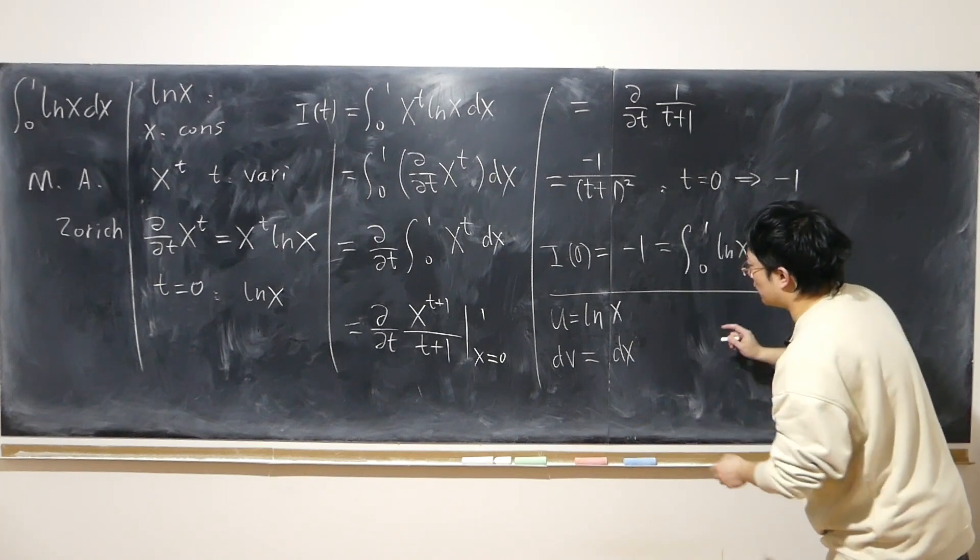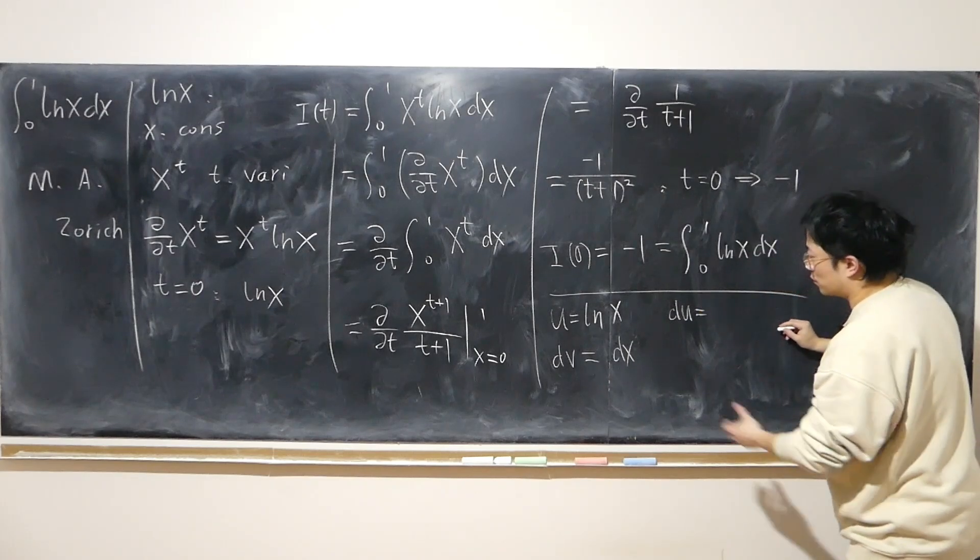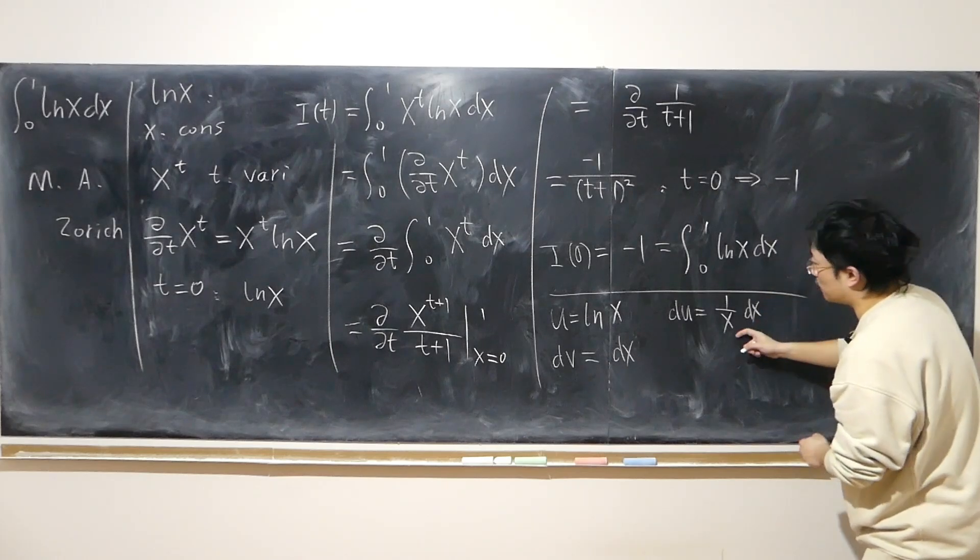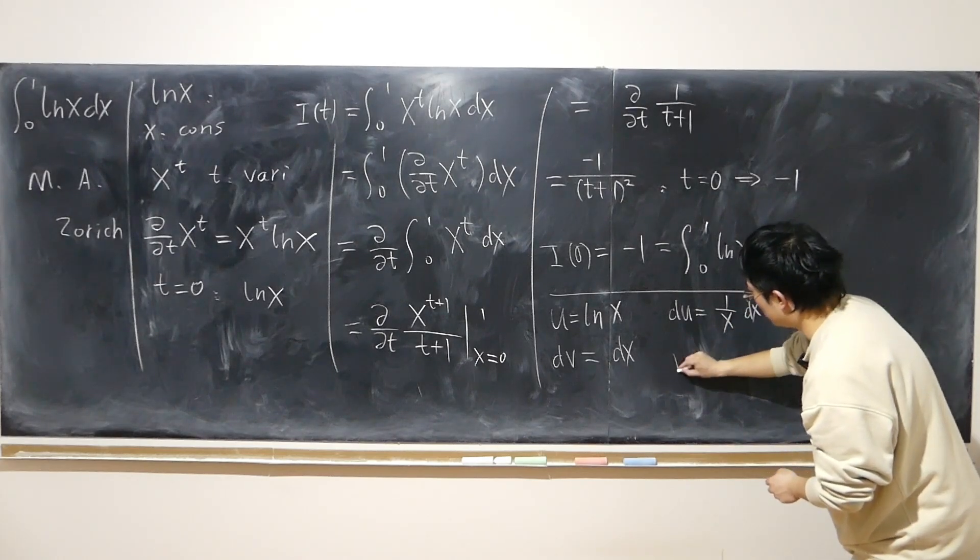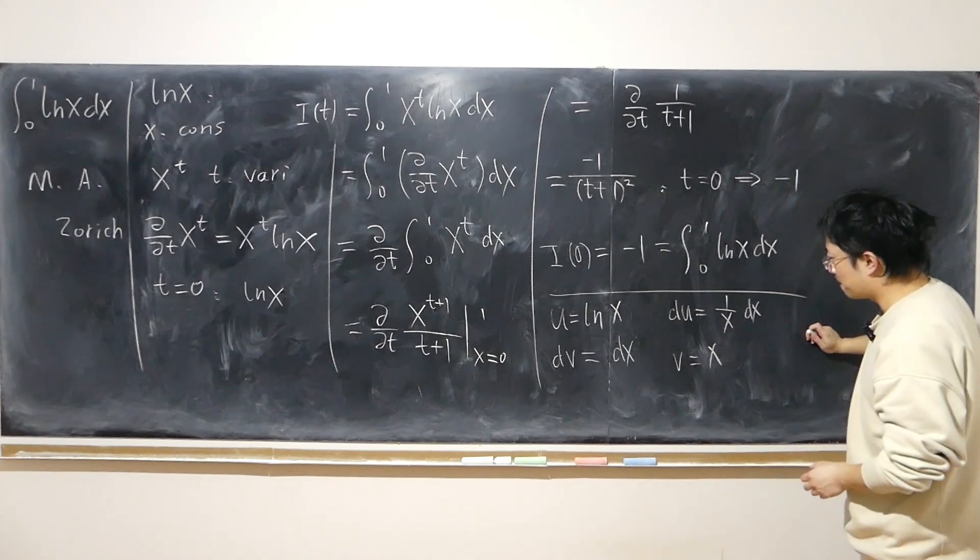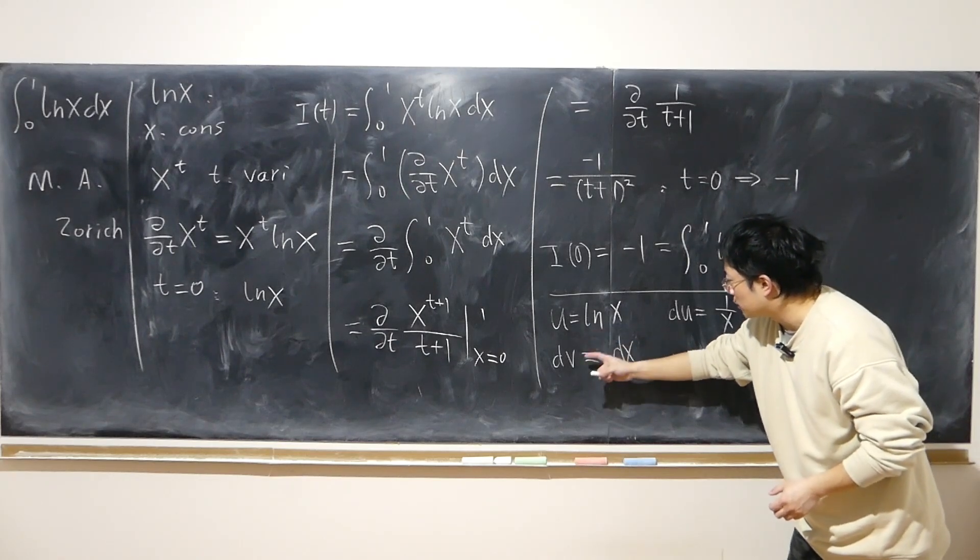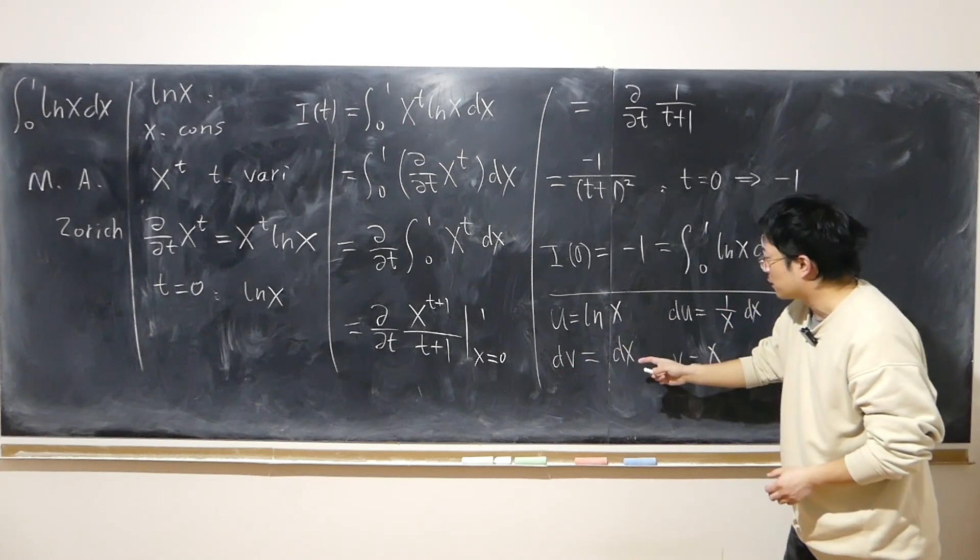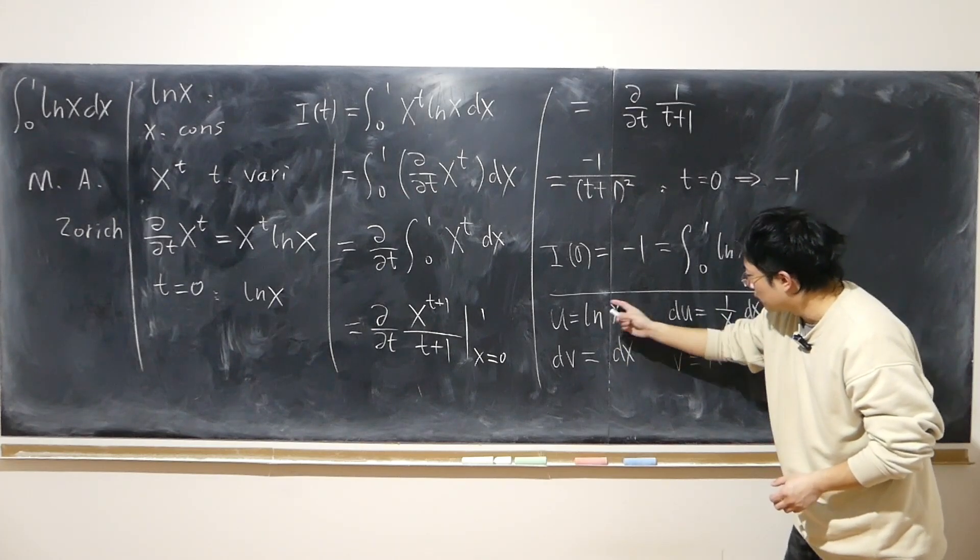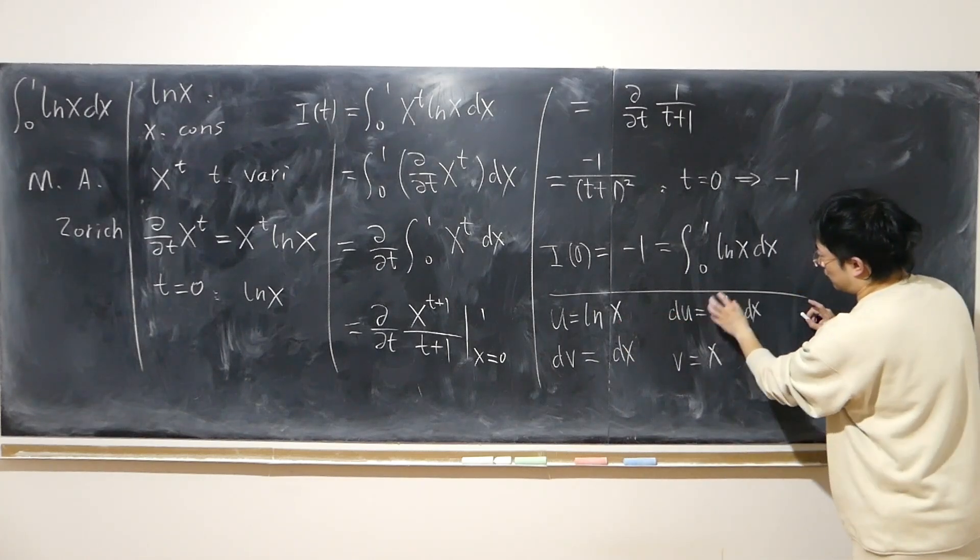Since it's easier for me to find du. Du is just 1 over x dx, and v is x. Otherwise, if I set dv equal to log x, then it's impossible for me to find the antiderivative of that. So du is easier.